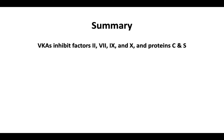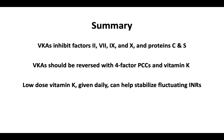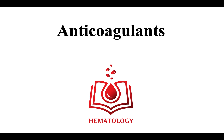In summary, vitamin K antagonists inhibit factors 2, 7, 9, and 10, and protein C and S. Vitamin K antagonists should be reversed with four-factor prothrombin complex concentrates and vitamin K. Low-dose vitamin K given daily can help stabilize fluctuating INRs. This ends our discussion on the class of anticoagulants known as the vitamin K antagonists.